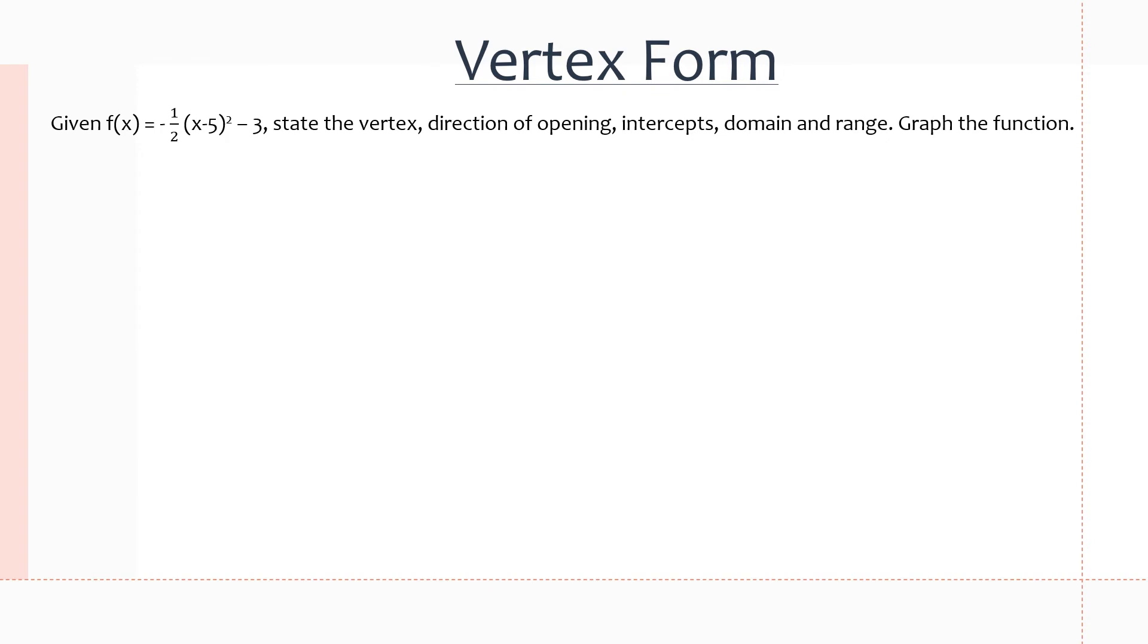Okay, so here is an example in vertex form. We're given a function. We have to state the vertex, direction of opening, intercepts, and domain and range. So we have the vertex at (5, -3), and we know that because of the h and k values. The negative 5 is the opposite, so it becomes 5 and negative 3. And the direction of opening is downwards. For intercepts, we do not have any x-intercepts, because it opens downwards and the vertex is at (5, -3).